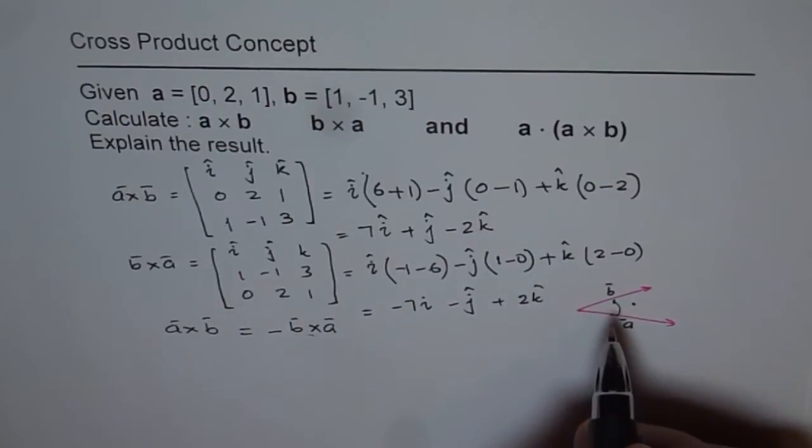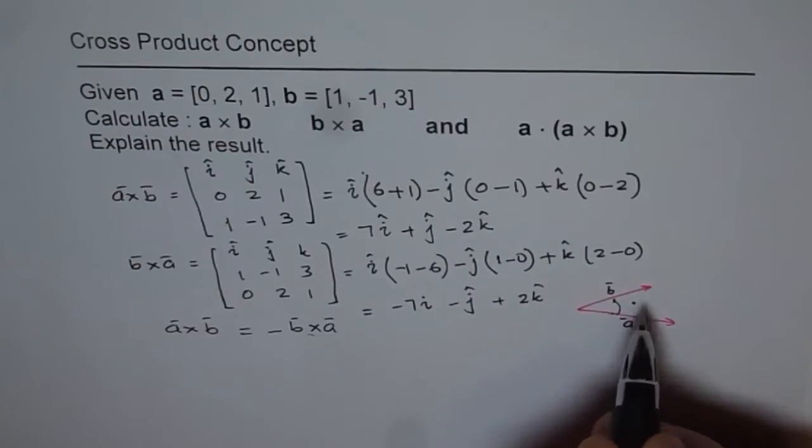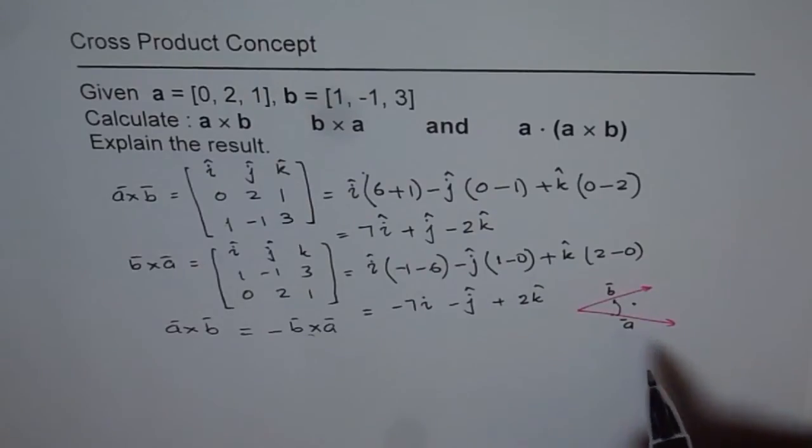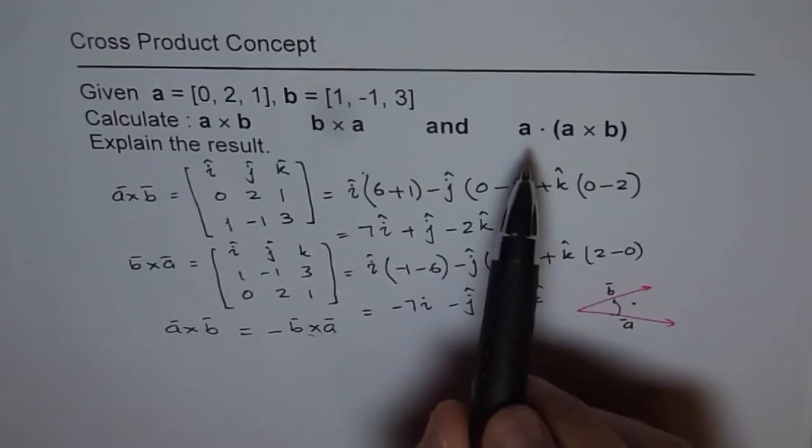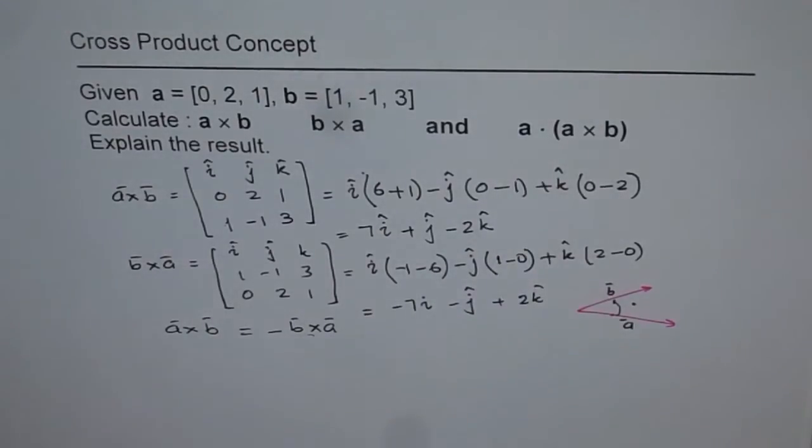Second, what we can show here is that if the vector is normal to this plane, then the dot product of that with A or B should be 0. That is another test we can now do. That is why I have this A dot A cross B.